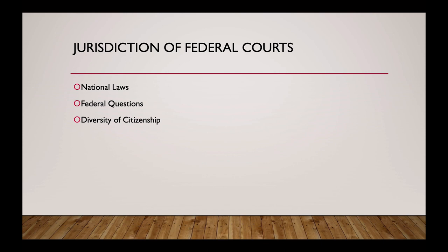The last type of federal jurisdiction is diversity of citizenship. For example, if a student who is a citizen of Ohio wants to file a lawsuit against a student who is a citizen of Indiana, neither the Indiana nor the Ohio state courts have jurisdiction over citizens of the other state. That would be a diversity of citizenship case, and it would have to go through the federal court system.